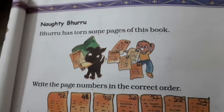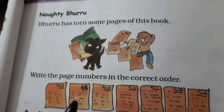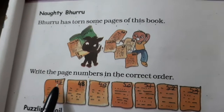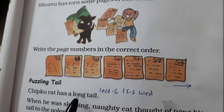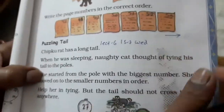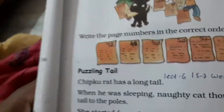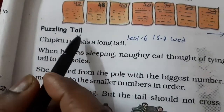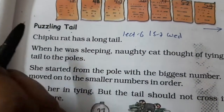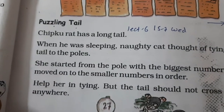Today we are going to do some more funny games, okay? In previous lecture, we have done this exercise about the guru. Now we are going to make some puzzling — puzzling tail. This puzzle means that someone's tail is coming.